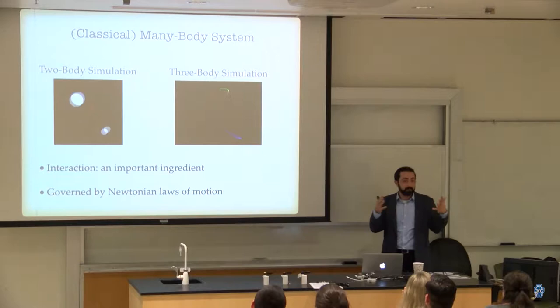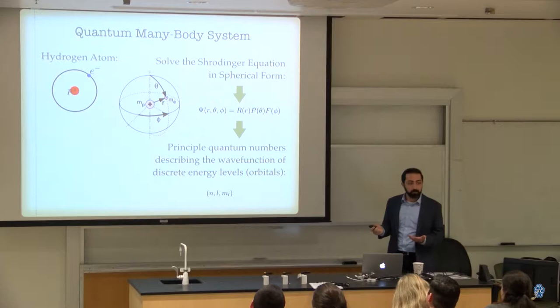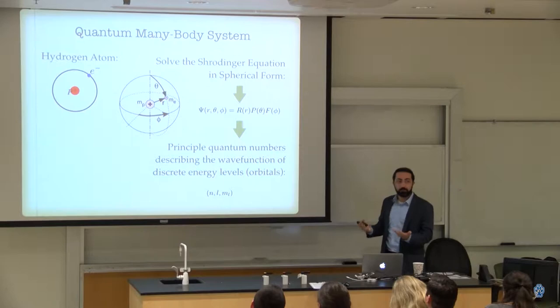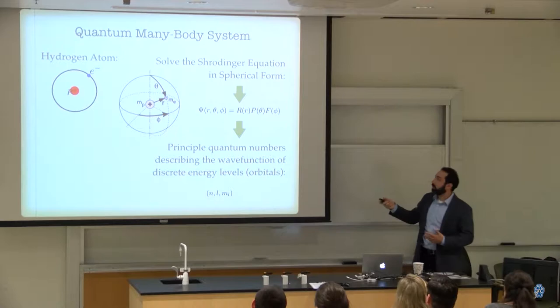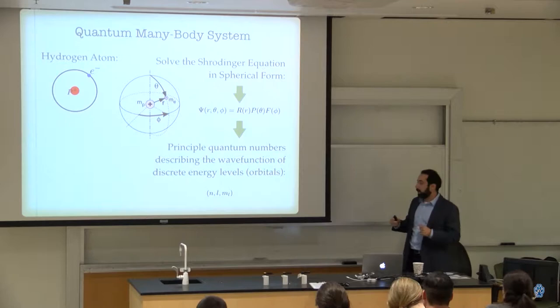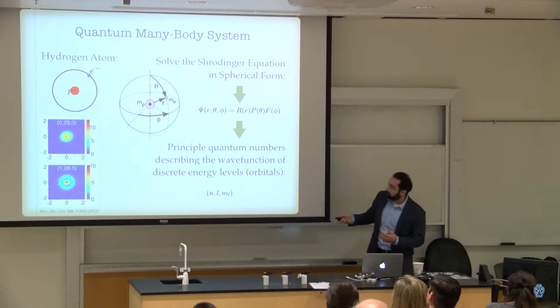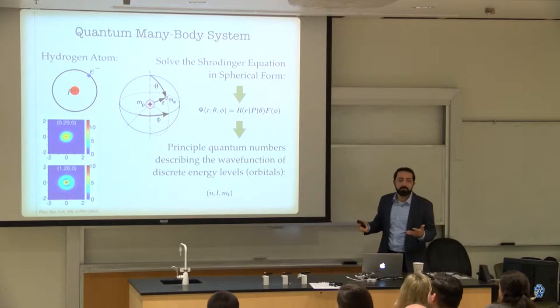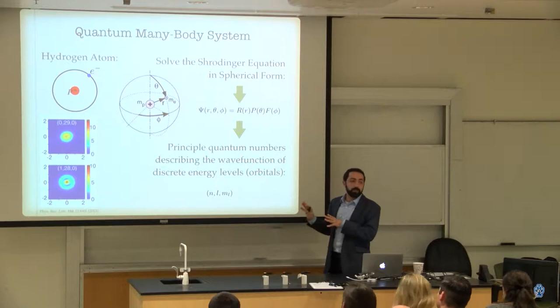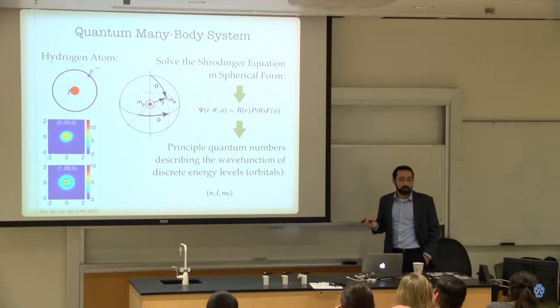In quantum mechanics, the simplest many-body system is the hydrogen atom — a similar two-body situation, but this time with Coulomb attraction. You have to solve the Schrödinger equation, go to spherical coordinates, do separation of variables, and find orbitals. The electron cannot take any energy or any orbit — it can only occupy certain energy levels with certain symmetries and quantum numbers. A recent paper even imaged a hydrogen atom, showing combinations of wave functions with different quantum numbers. Even this two-body quantum system is very complicated to solve — it fills one entire chapter of a quantum mechanics book.